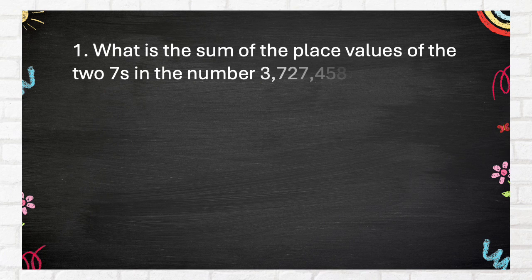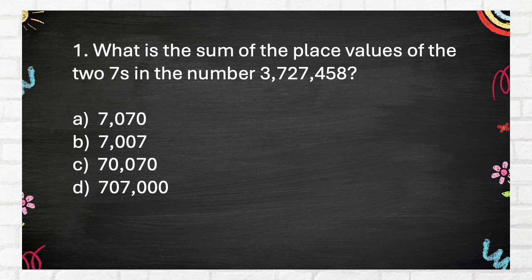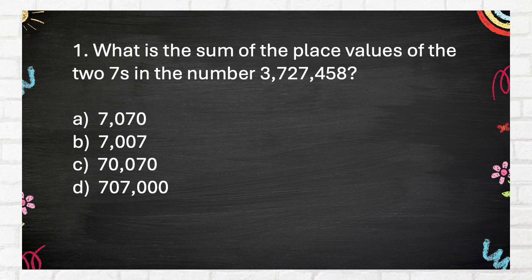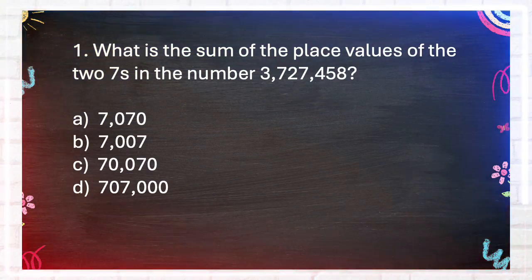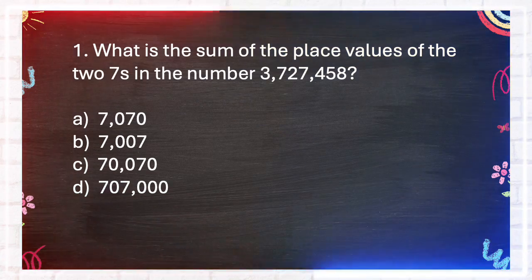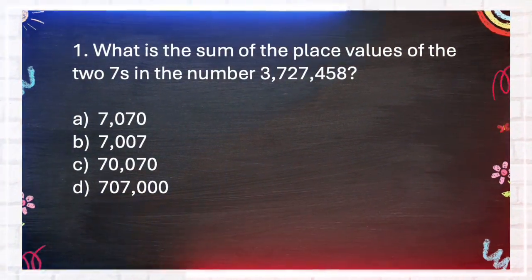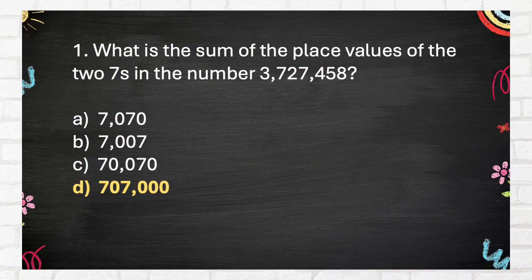Question number 1. What is the sum of the place values of the two sevens in the number 3,727,458? A. 7,070, B. 7,007, C. 70,070, D. 707,000. The answer is D. 707,000.